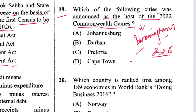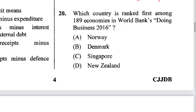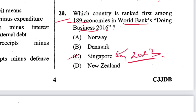Question 20: Which country is ranked first among 189 economies in the World Bank's Doing Business 2016 report? That was Singapore — and in 2023 it is still Singapore.